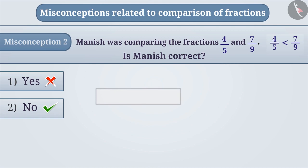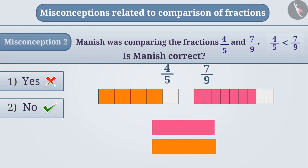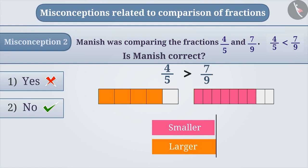You can also use a strip of fractions to find the smaller fraction. Here, one strip is divided into 5 equal parts where 4 parts represent the fraction 4/5. Similarly, another strip is divided into 9 equal parts where 7 parts represent the fraction 7/9. If we compare these strips, we can see that the strip representing 7/9 is smaller than the strip representing 4/5. Therefore, the fraction 7/9 is smaller than 4/5.